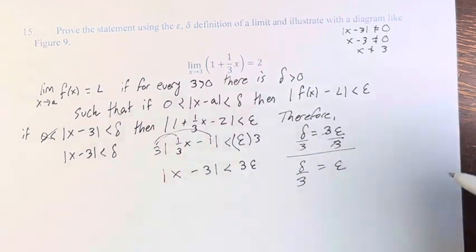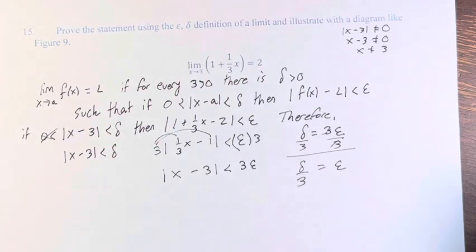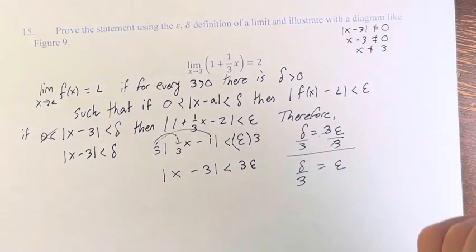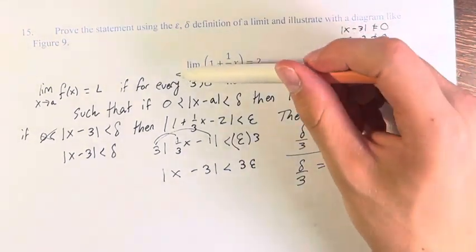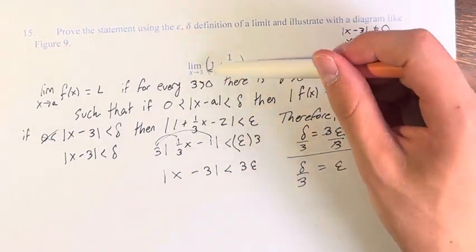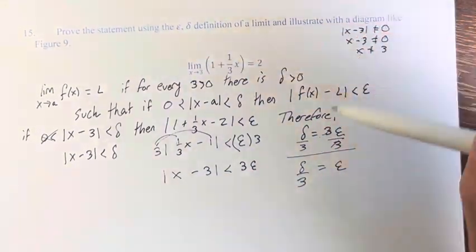No matter what epsilon we take, we have an associated delta. Therefore, there is a limit as x approaches 3 of this function equal to 2.